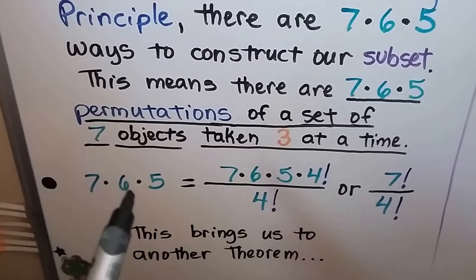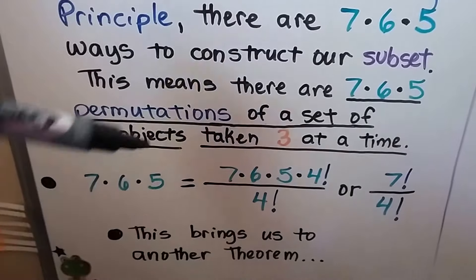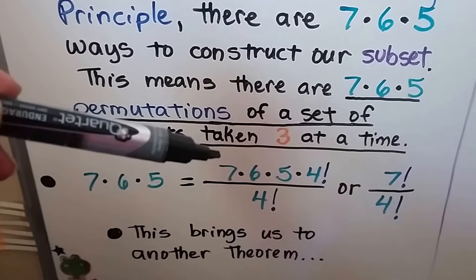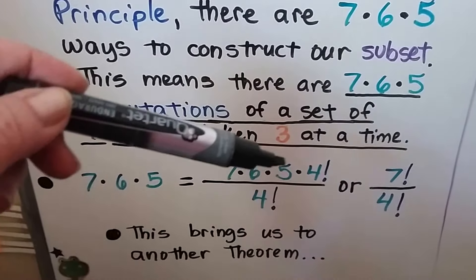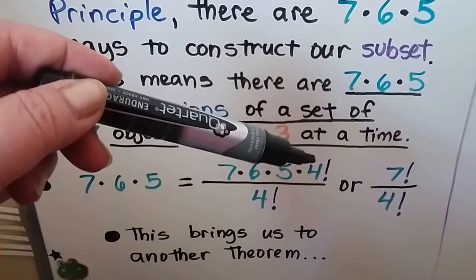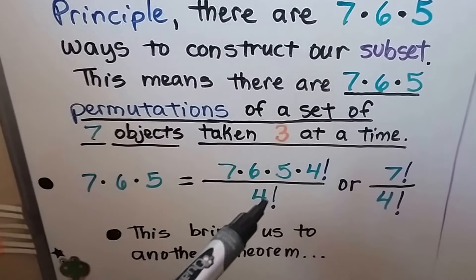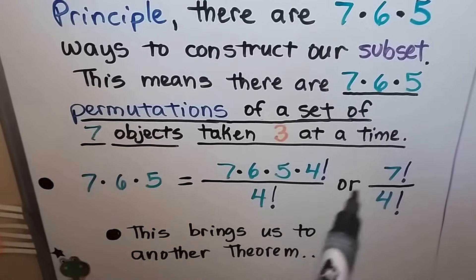We have 7×6×5. We can say it equals 7×6×5×4! over 4!. It's 7! over 4!.